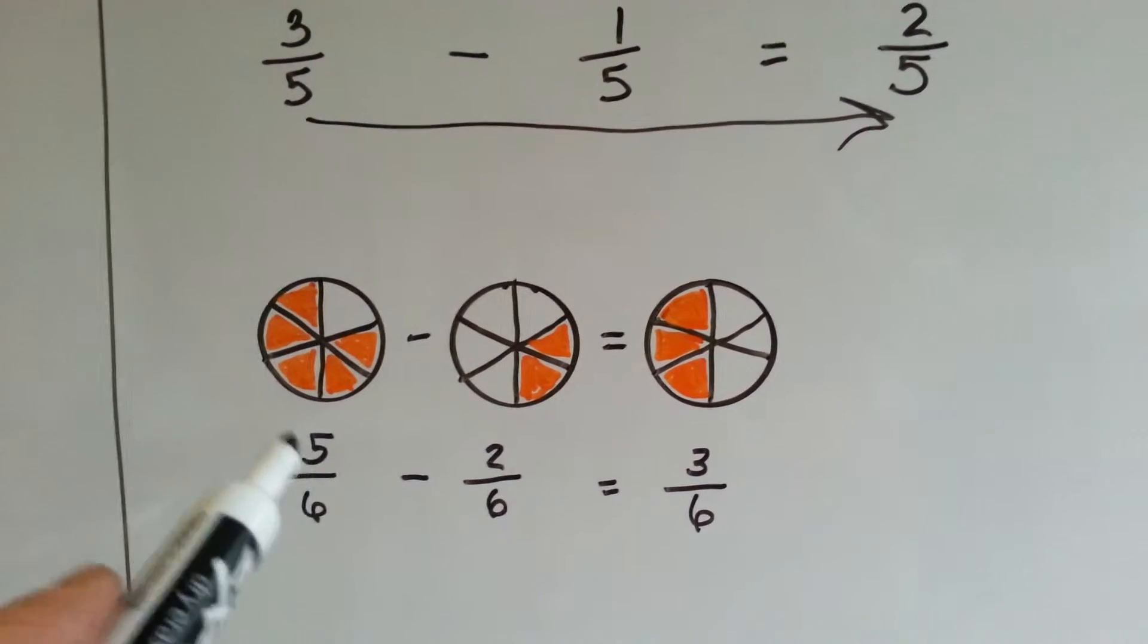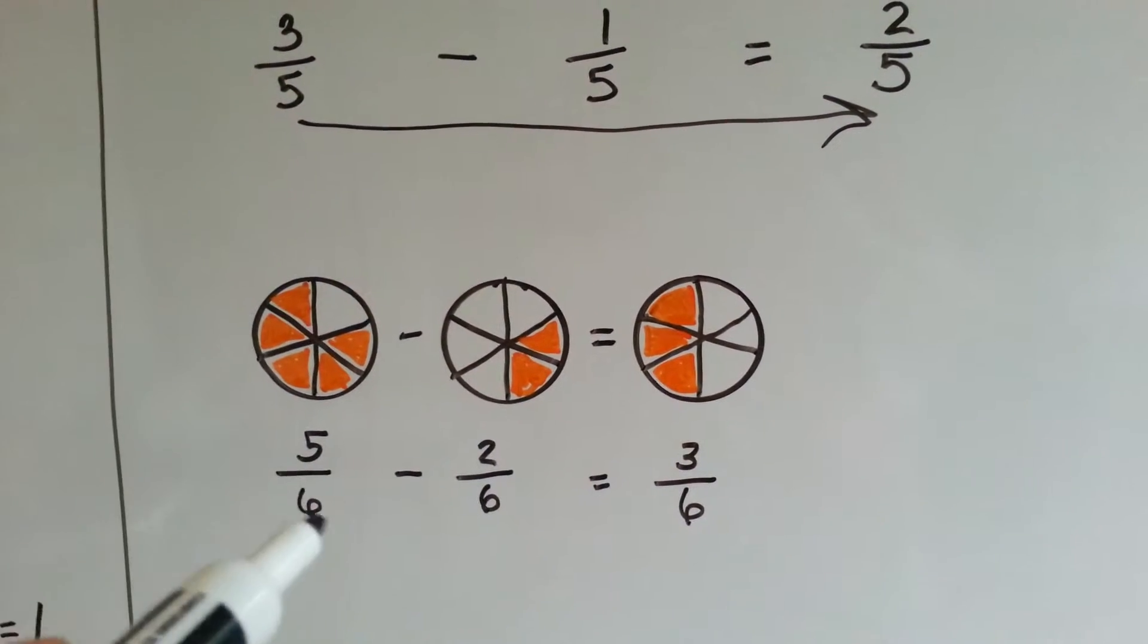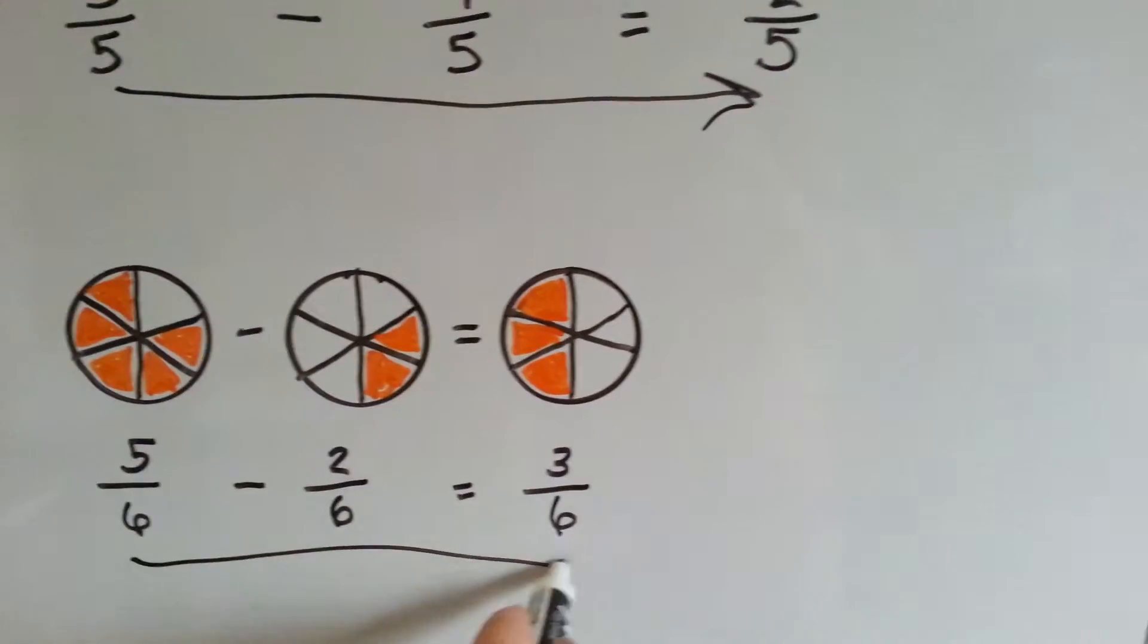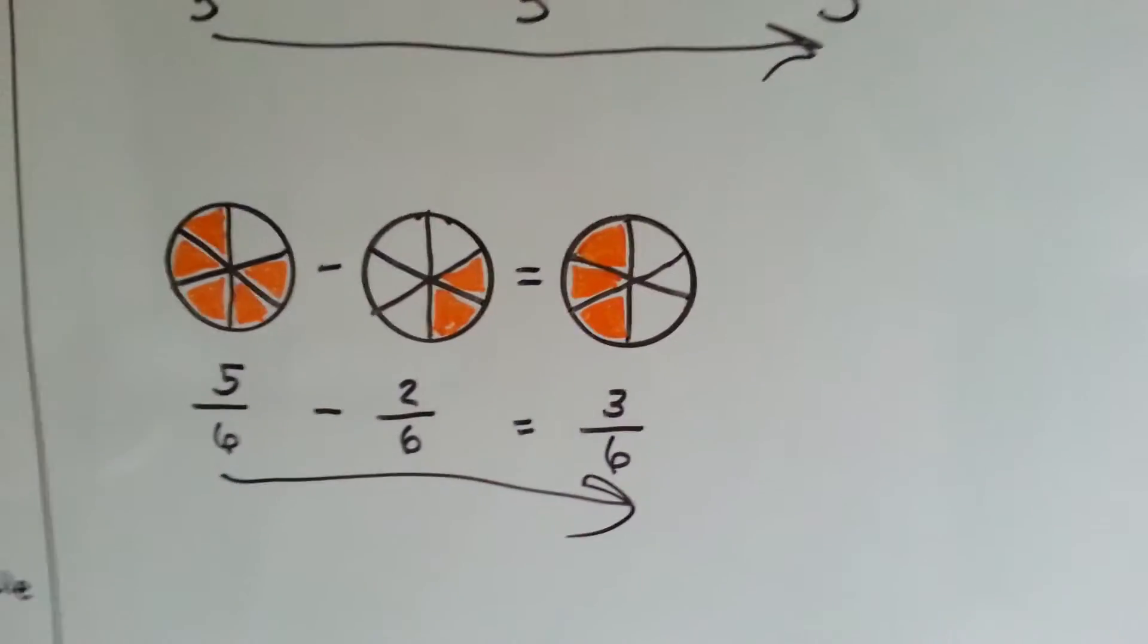We talked about those. So, five sixths, take away two sixths, equals three sixths. Five, take away two, equals three. And we slid the denominator across.